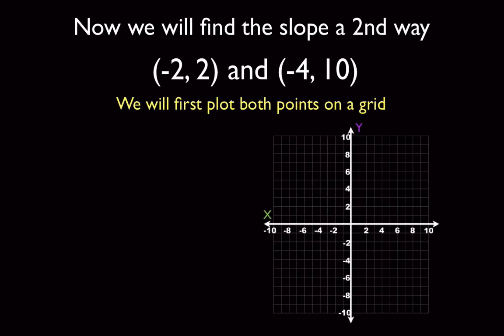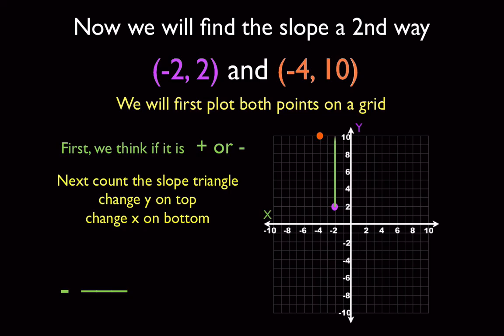Now we're going to do the same exact problem using the graphing method. And remember, we already know our slope is negative 4. So go ahead and pause it. Try to go through those steps. Plot your points. Go through each piece. First thing, you should have plotted this point right here. And then this point right here. Next thing we're going to do is we're going to decide is it positive or negative. This one ends up being negative. So if you forgot that, make sure you throw the negative sign on there. But remember, we could compare it to the previous example. Now we're going to make our slope triangle. It goes up 8 and over 2. So 8 over 2 simplifies out to negative 4 over 1.